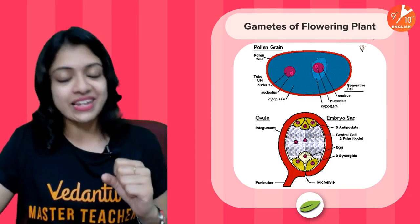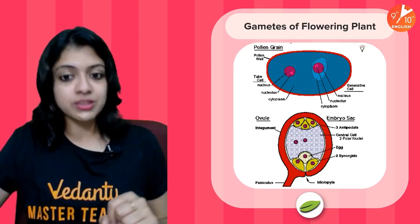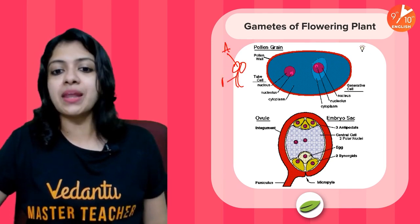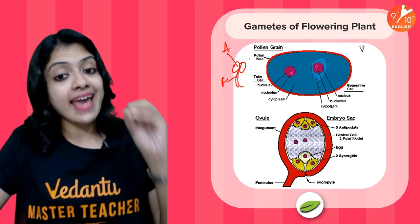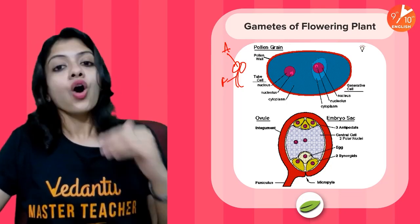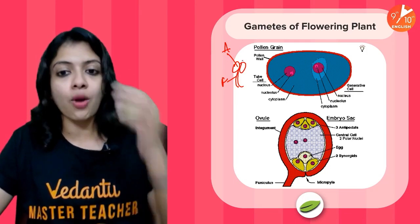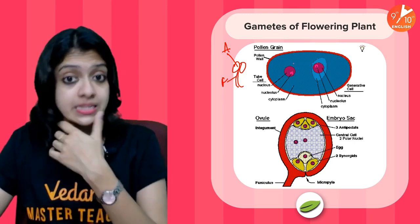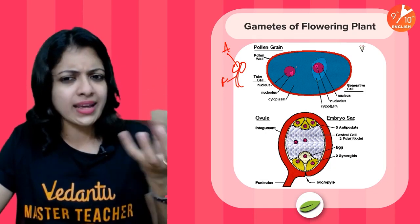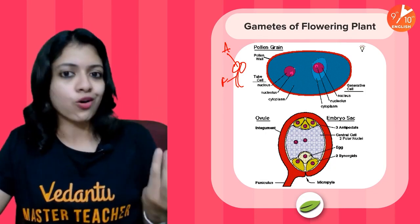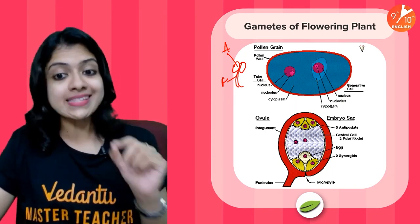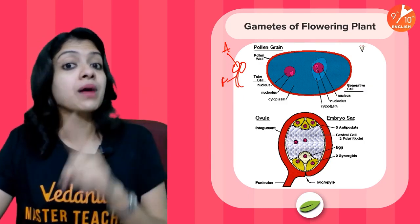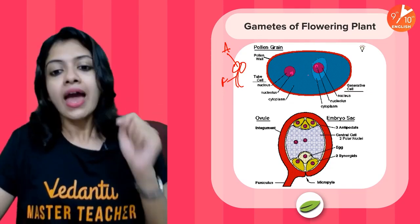Now let's talk about the gametes in a flowering plant. The pollen grains are produced by the anther — remember, the anther and the filament make up the stamen, and it is the anther which produces pollen grains. The structure of a single pollen grain is shown here just to give you a clear visual idea. Inside a pollen grain, you can see that there are two sperm nuclei — so remember, there are two sperm cells within one pollen grain. That is very important.